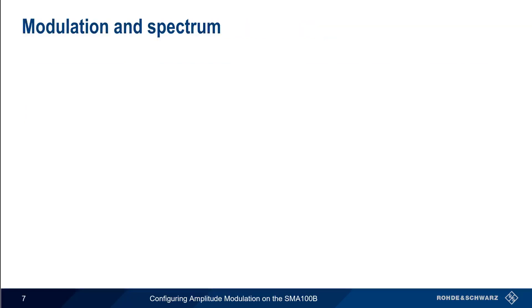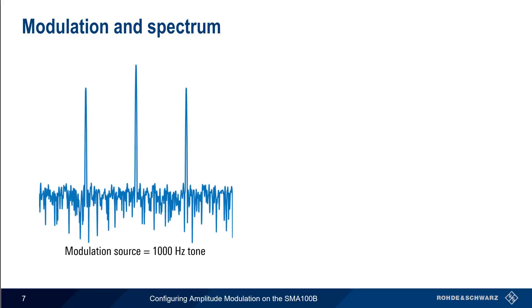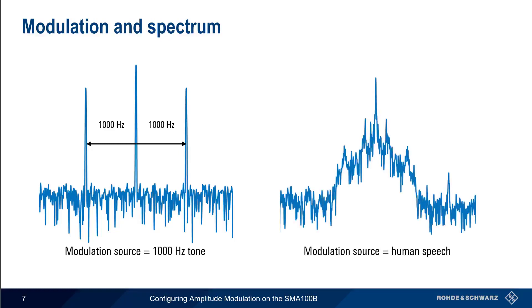Recall that AM modulation creates spectral sidebands. When we use a simple 1,000 Hz sine wave signal as a modulation source, we see this as two tones in the spectrum: 1,000 Hz above and 1,000 Hz below the carrier. Human speech, on the other hand, contains very broad spectral content. So if we were to use human speech as our modulating signal, the spectrum of the resulting AM modulated carrier would look very different.